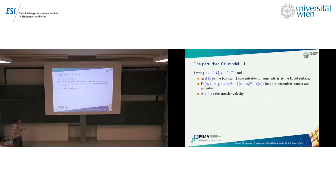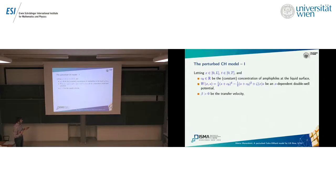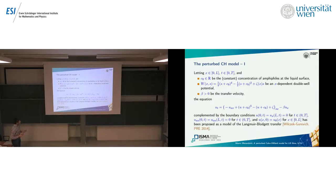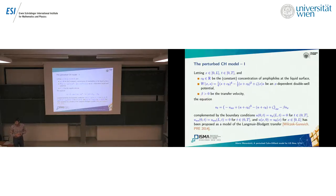The perturbation of this model proposed in the paper carried out some adjustments: they considered the constant concentration of the amphiphiles at the liquid surface — the effect of pushing the barriers — and the double-well potential is slightly tilted so that one well is at c₀. The function zeta of x keeps track of the meniscus effect, and beta positive is the transfer velocity. The resulting equation adds a term from the drift due to the extraction velocity, as proposed by Wilczek and Gurjevic.